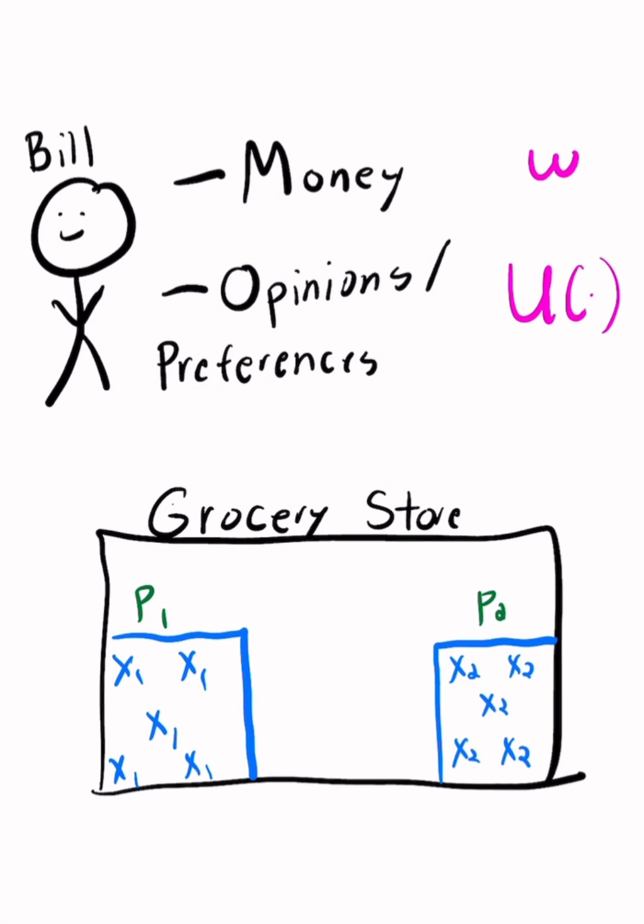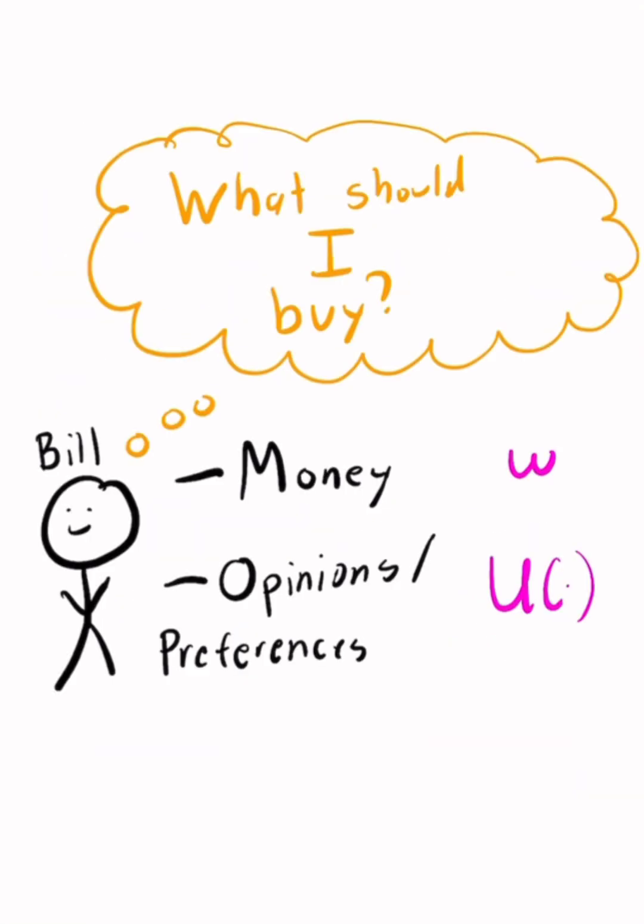Now Bill is about to walk into a grocery store that sells two things X1 and X2 priced at P1 and P2. The problem that Bill faces is which combination of X1 and X2 he should buy given his money and the prices.